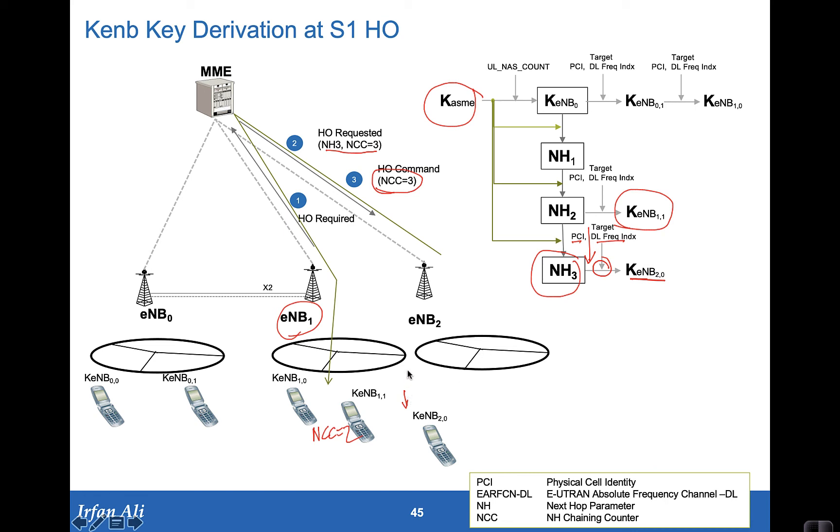So with this, there is complete security in the target E-node B2 that E-node B1 cannot look into or cannot decode the communication that is happening at the access stratum between the mobile and E-node B2.